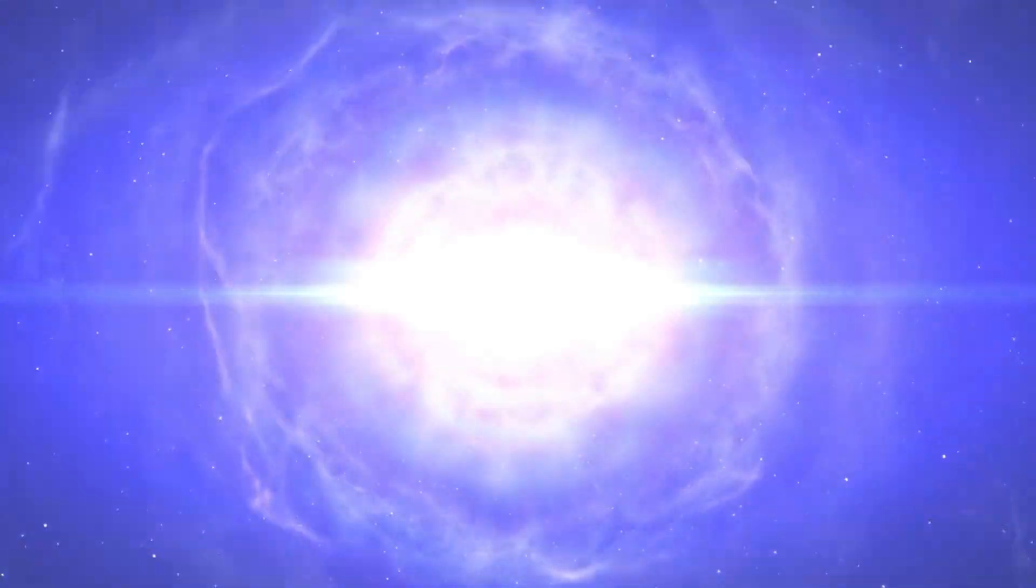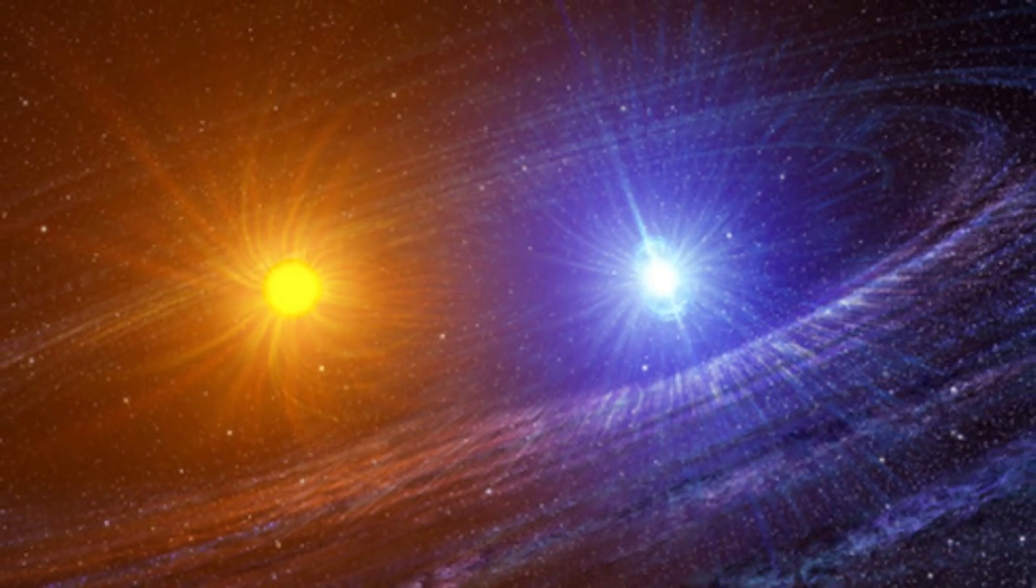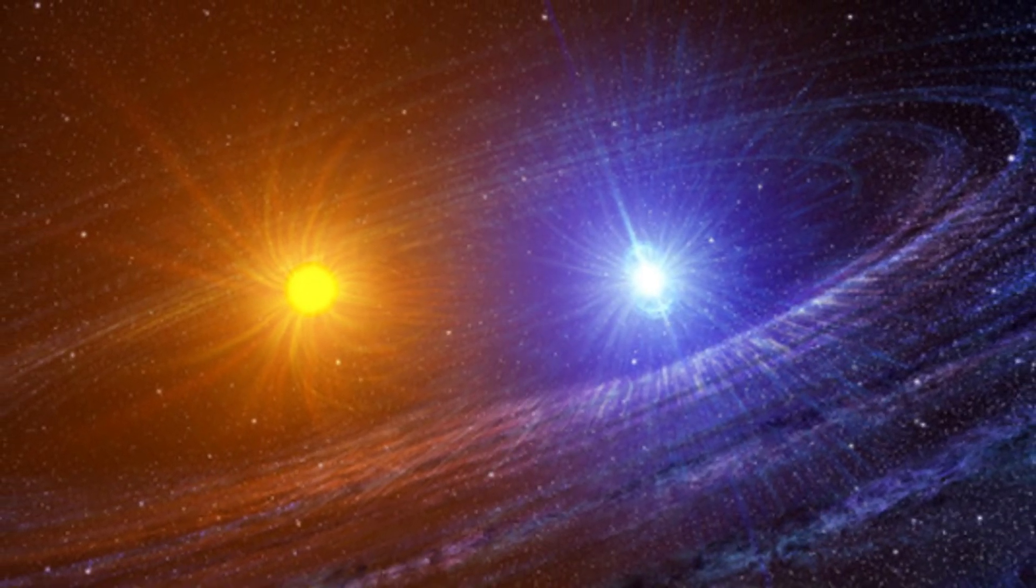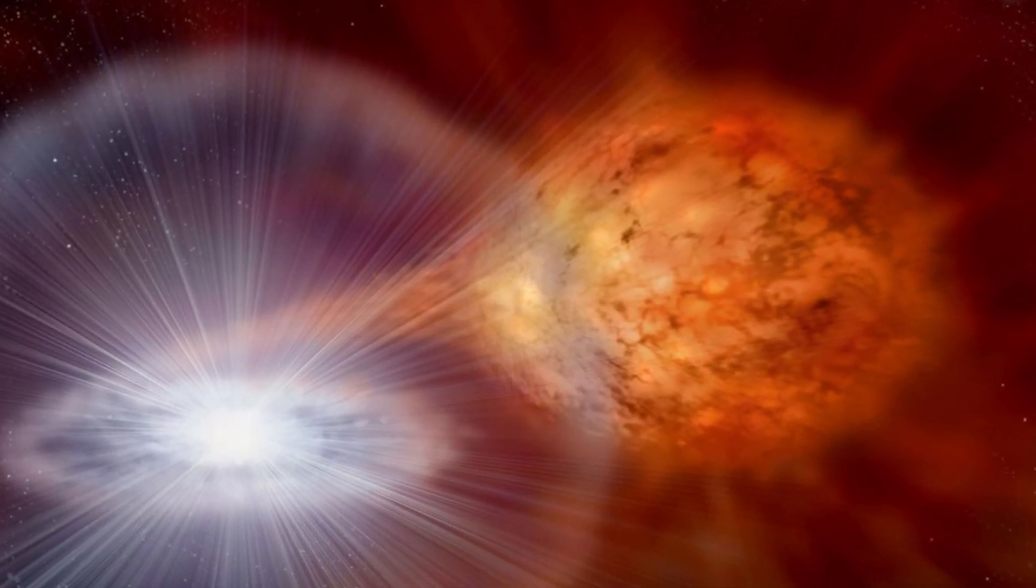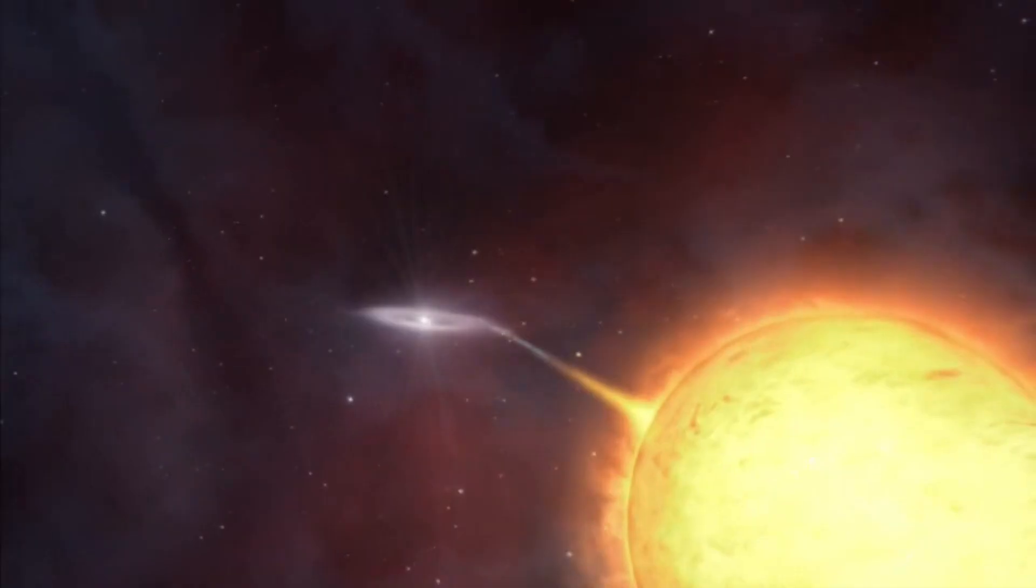Why is the nova outburst such a spectacle? This type of explosion is akin to a colossal hydrogen bomb detonating, capable of ejecting the entire atmosphere of an Earth-sized white dwarf. However, unlike the cataclysmic obliteration caused by a supernova, these events don't lead to the complete annihilation of a star. Nonetheless, their significance and awe-inspiring nature remain undiminished.